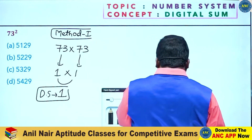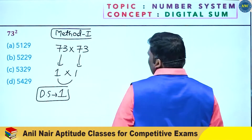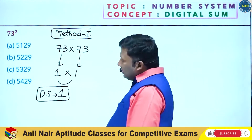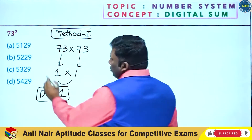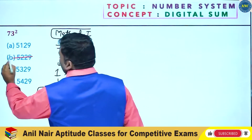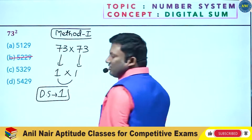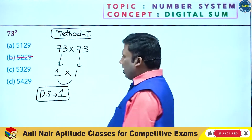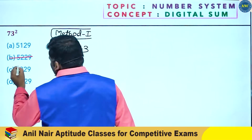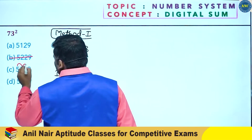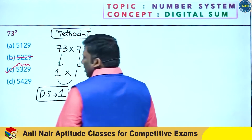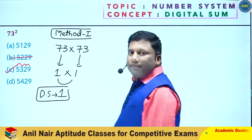The answer's digital sum should also be 1. Checking: 9 plus 9 is 18, which reduces to 9. Then 5 plus 3 is 8, 8 plus 2 is 10, 10 plus 9 is 19, which reduces to 1.